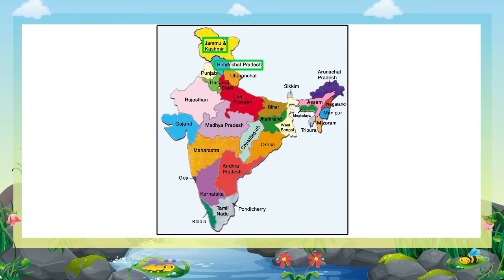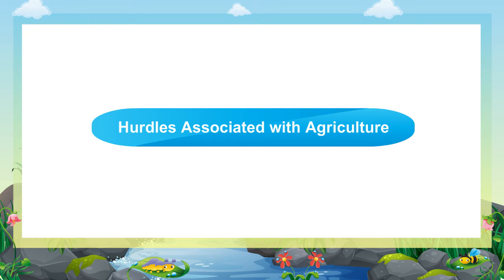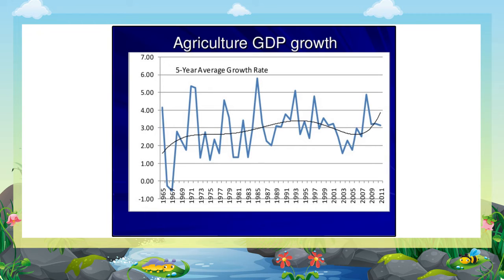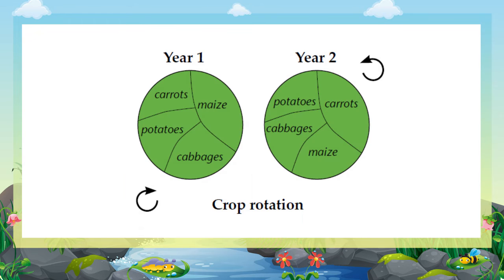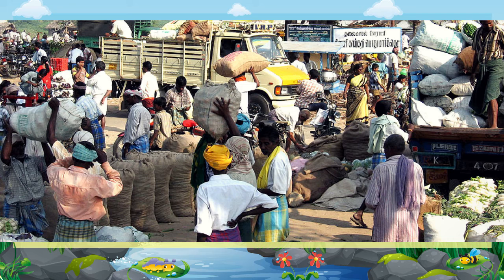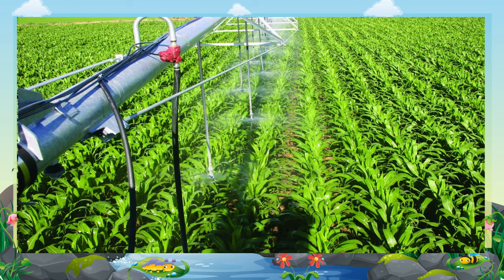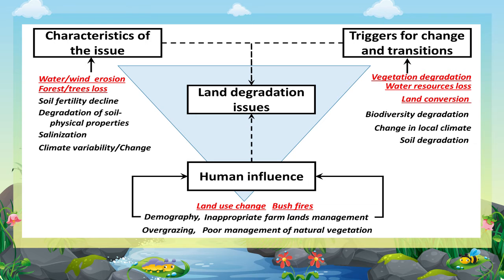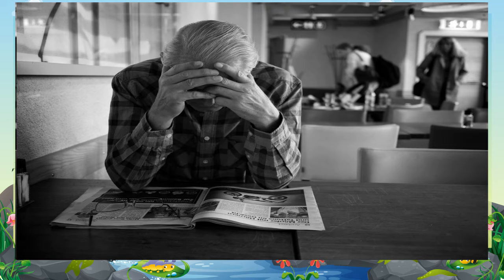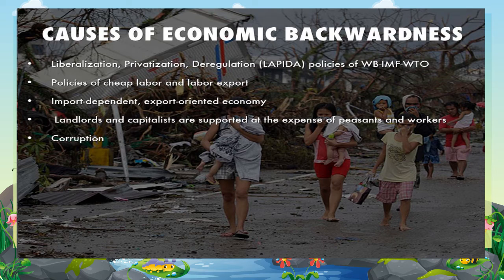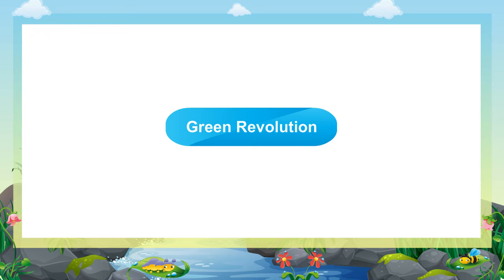Hurdles associated with agriculture: It is unfortunate that the growth rate in agriculture is slow, as about 62 percent of the population depends on agriculture. Some hurdles are: one, lack of proper knowledge of crop rotation; two, no proper access to markets due to poor road facilities; three, low level of irrigation systems; four, problems of land degradation; five, illiteracy and high socio-economic backwardness; six, improper costing.